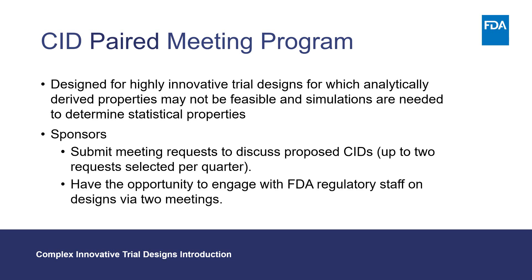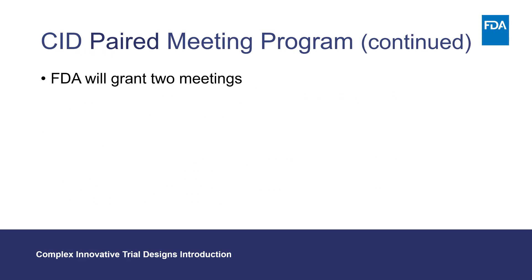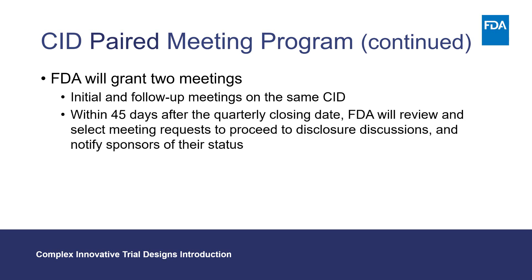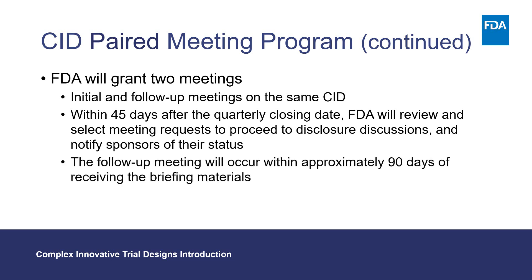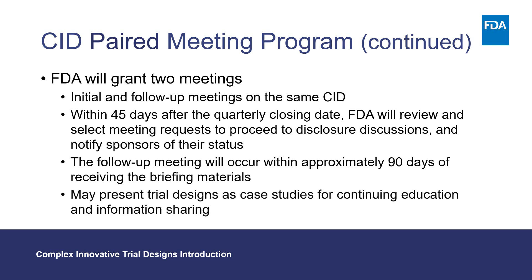FDA selects up to two meeting requests for the program per quarter. For granted meeting requests, FDA will conduct an initial and follow-up meeting to discuss regulatory approaches on the same proposed CID and medical products. Within 45 days after the quarterly closing date, FDA will review and select meeting requests to proceed to disclosure discussions and notify sponsors of their status. The follow-up meeting will occur approximately 90 days after receiving debriefing materials. FDA may present trial designs as case studies for continuing education and information sharing, contingent on FDA and the sponsor reaching a disclosure agreement.